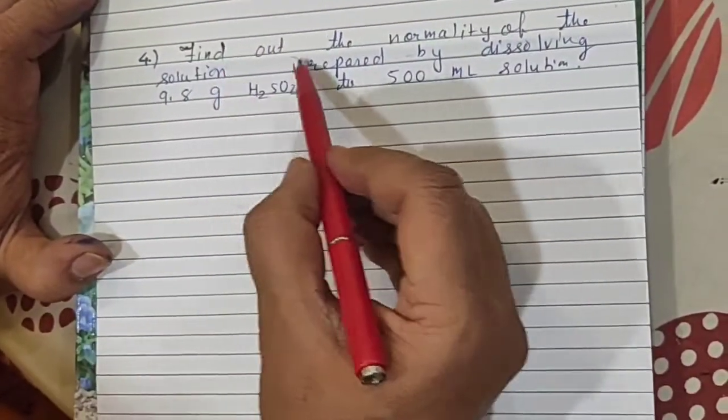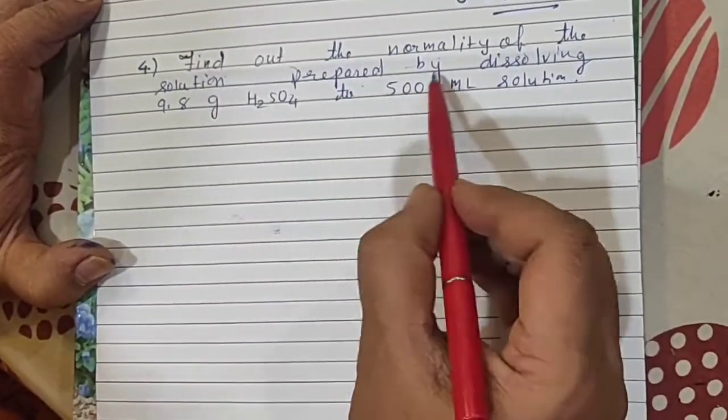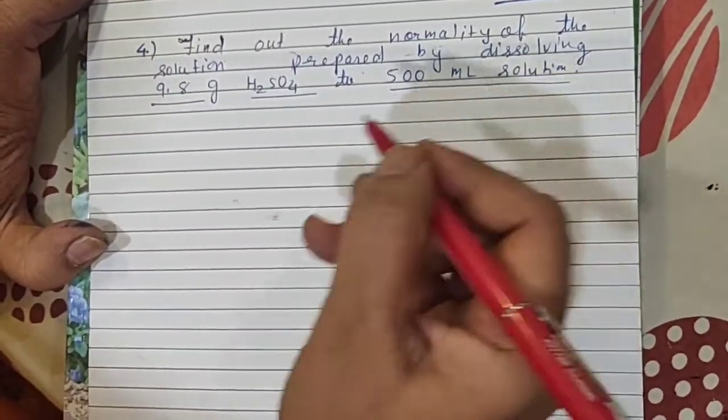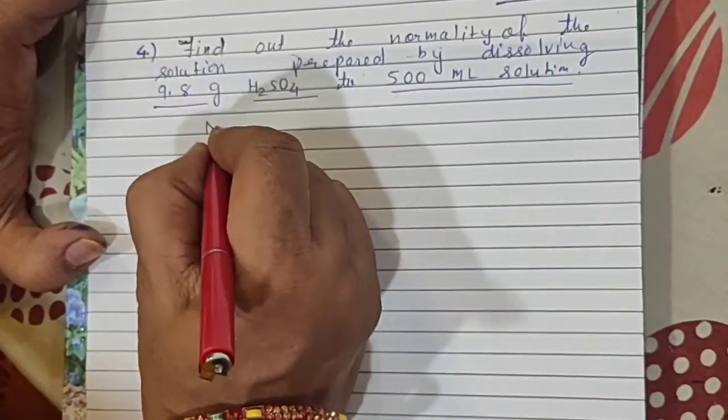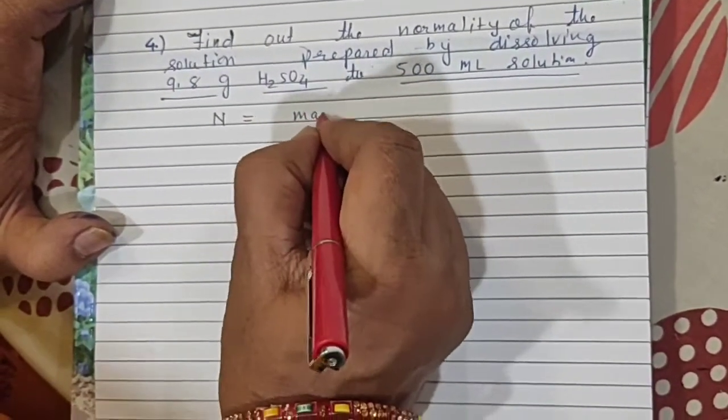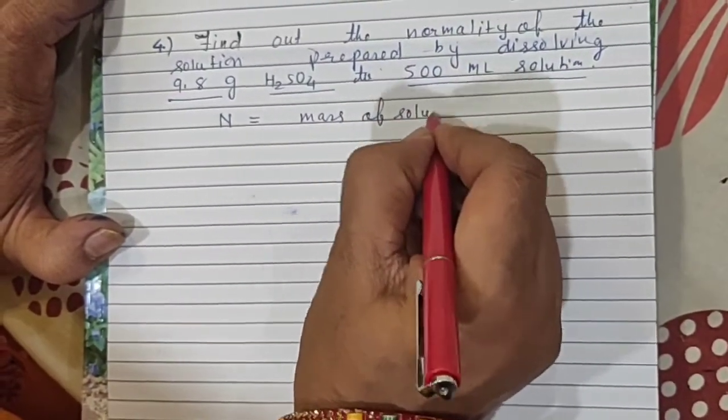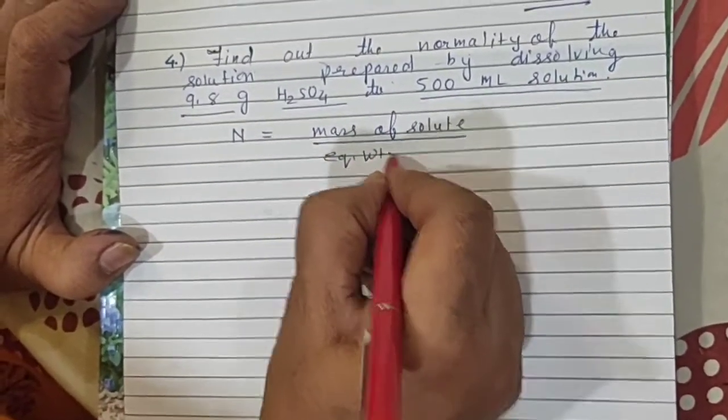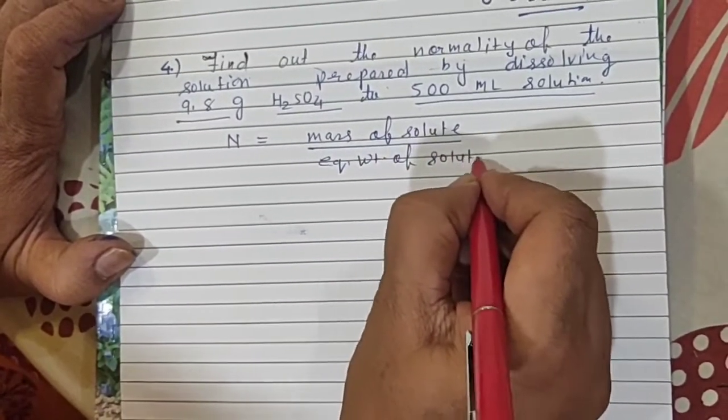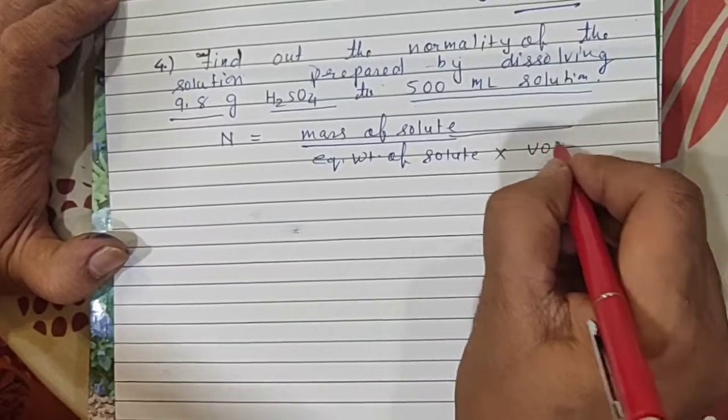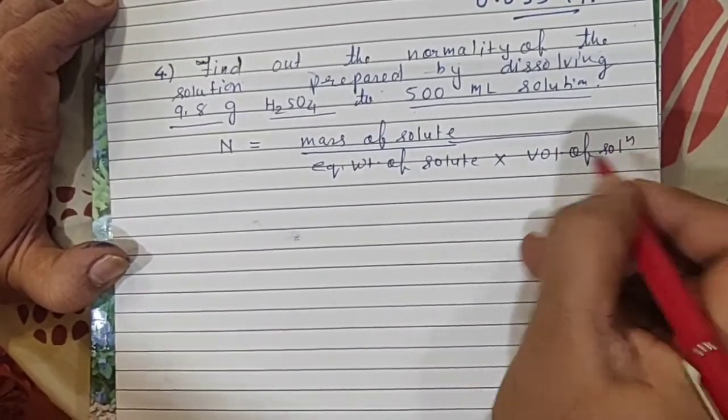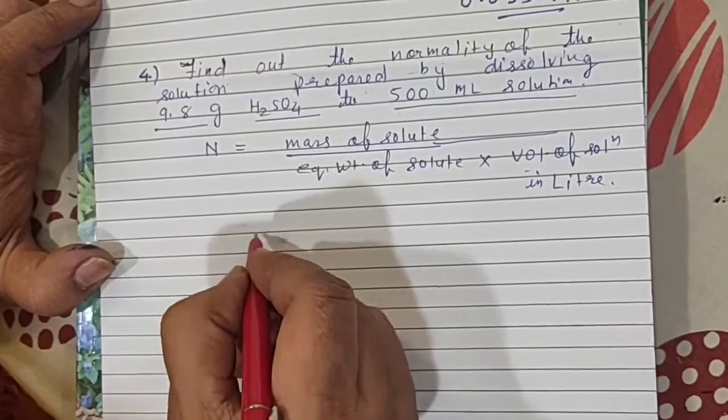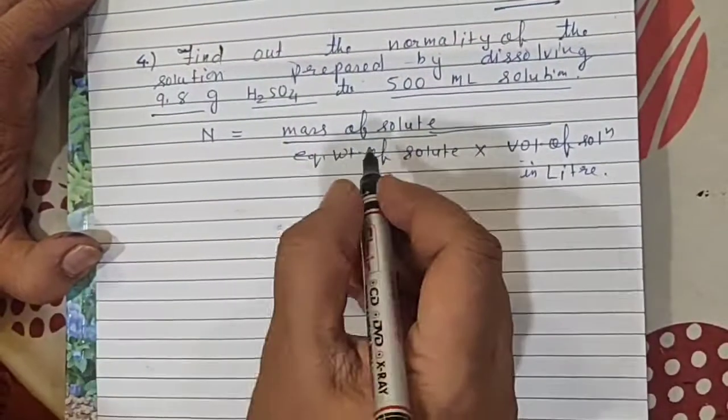Next question: find out the normality of the solution prepared by dissolving 9.8 gram H2SO4 in 500 ml solution. Question is of normality. What is the formula for normality? Normality is equal to mass of solute divided by its equivalent weight of solute into volume of solution in liters.